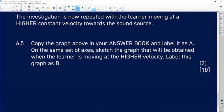Let us now look at 6.5. We are given a statement. It says that the investigation is now repeated with the learner moving at a higher constant velocity towards the sound of the source. What are we then asked to do here? We have to copy the graph above in your answer book and then label it as A on the same set of axes. Sketch the graph that will be obtained when the learner is moving at a higher velocity.